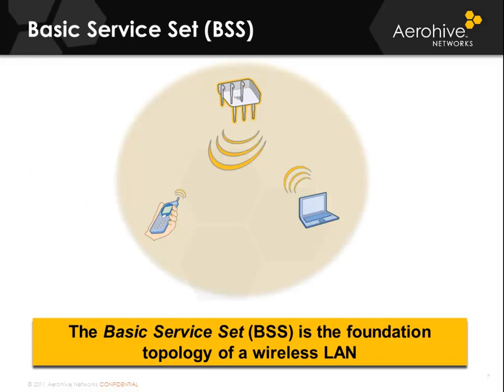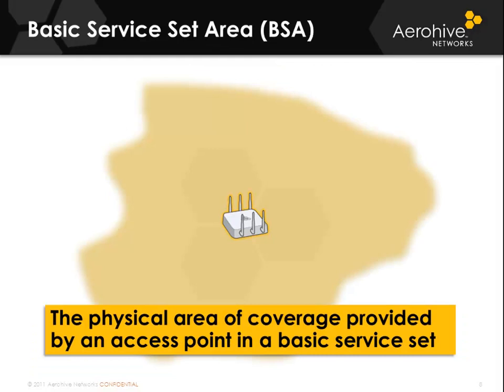A basic service set is really the beginning of an enterprise wireless network. You will have an access point connected to the distribution system and client devices connecting to the access point. The basic service set is the foundation topology of a wireless local area network. The basic service set area is the physical area of coverage provided by an access point — essentially the cell size of the access point.